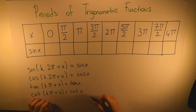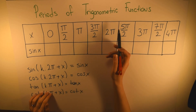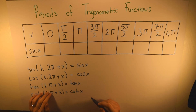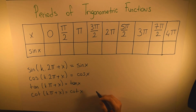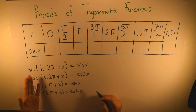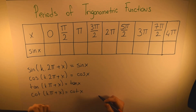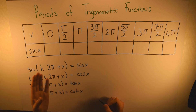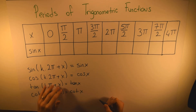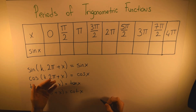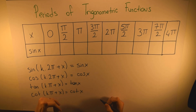Let's continue with periods of trigonometric functions. Period means a series of events — for example, days of one week. Its period is seven; every week it repeats, those days repeat themselves. Similarly, trigonometric functions are also cyclical, which means they have their own periods.